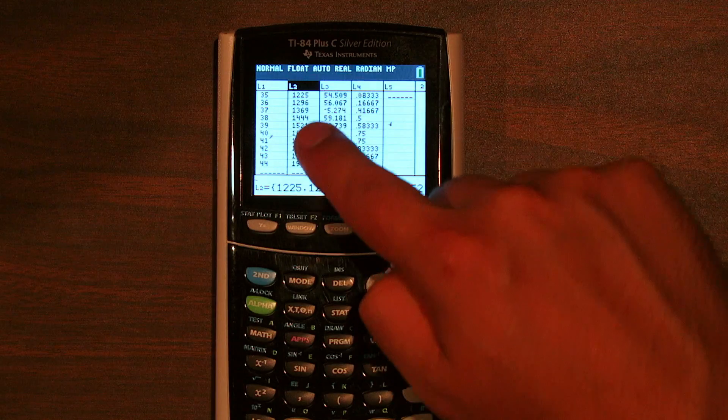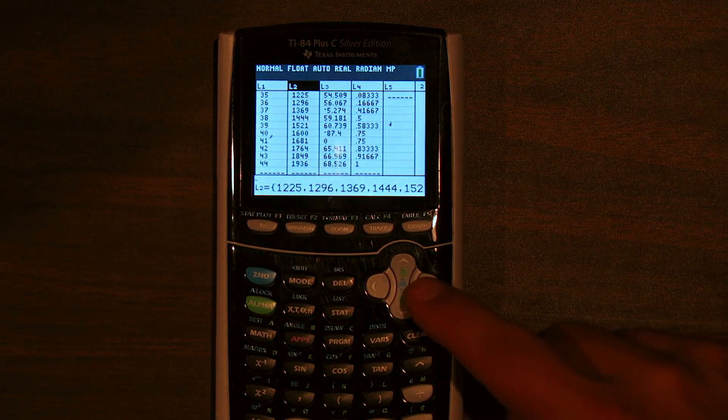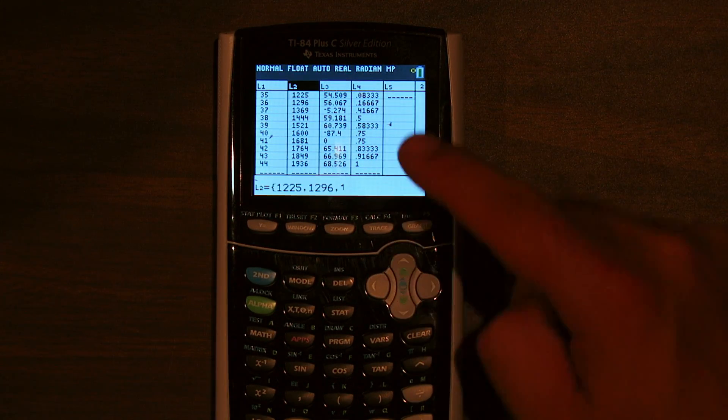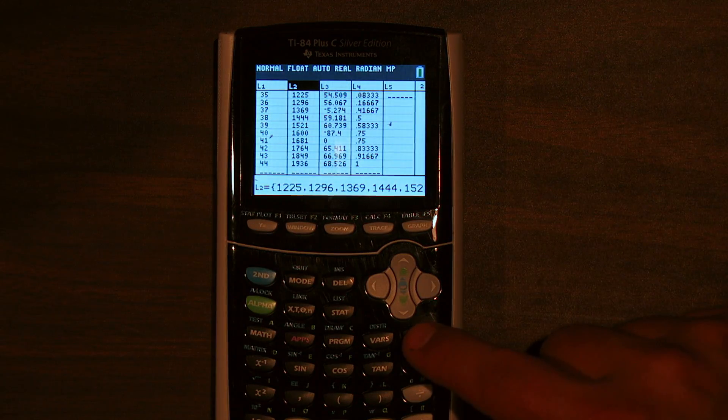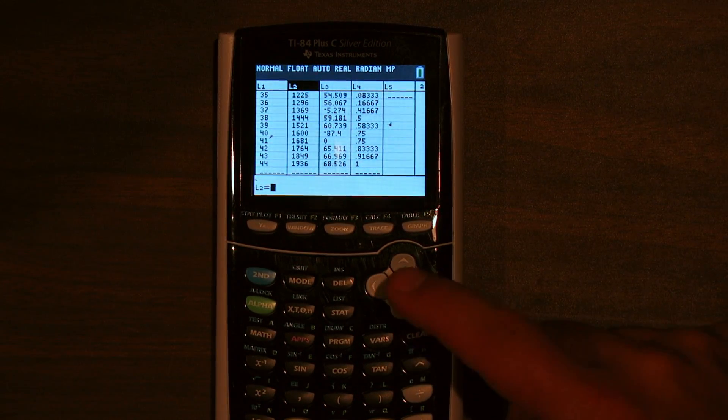If you want to clear a list, like if I wanted to clear list 2 out, all I have to do is highlight the name, so push up so list 2 is highlighted, press clear, and then press down. Now list 2 is cleared.